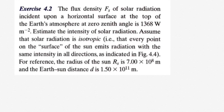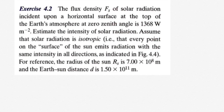Let's try this exercise from the Wallace book. I'll go through it very briefly. The flux density, or FS, of solar radiation incident upon a horizontal surface at the top of the Earth's atmosphere at zero zenith angle — that means direct from the top — is 1368 watts per meter squared.